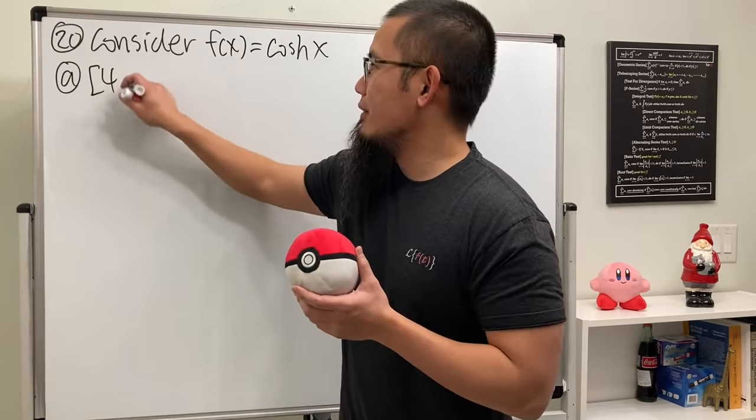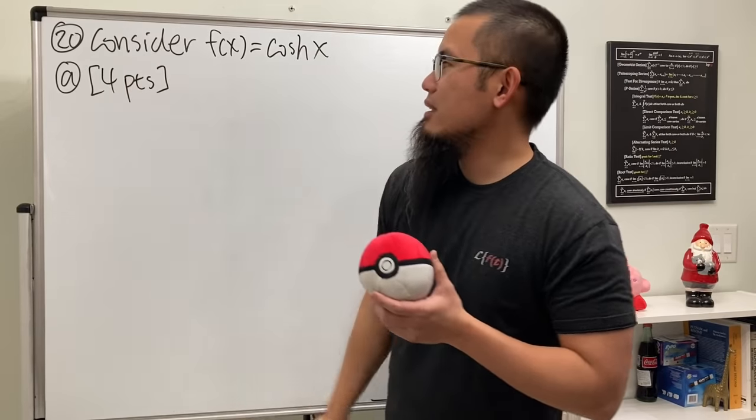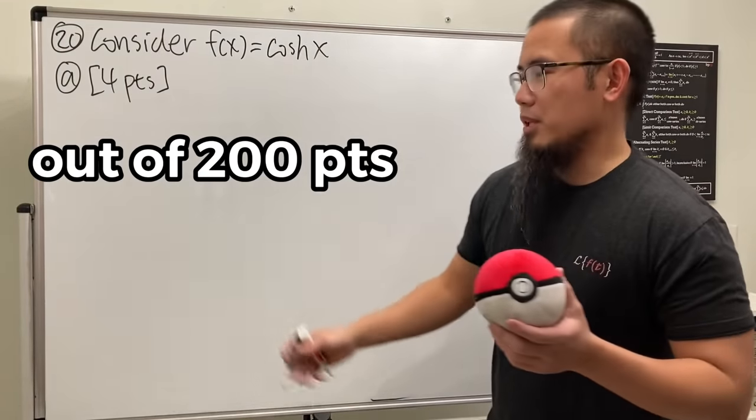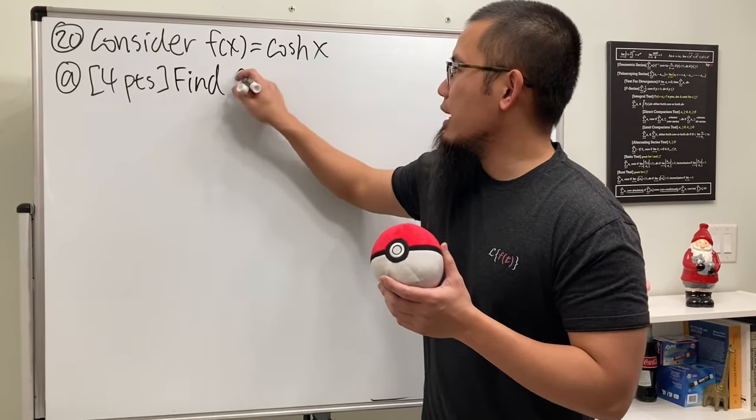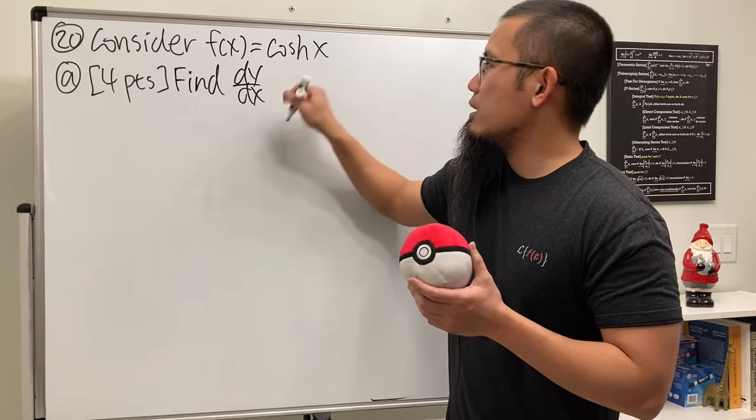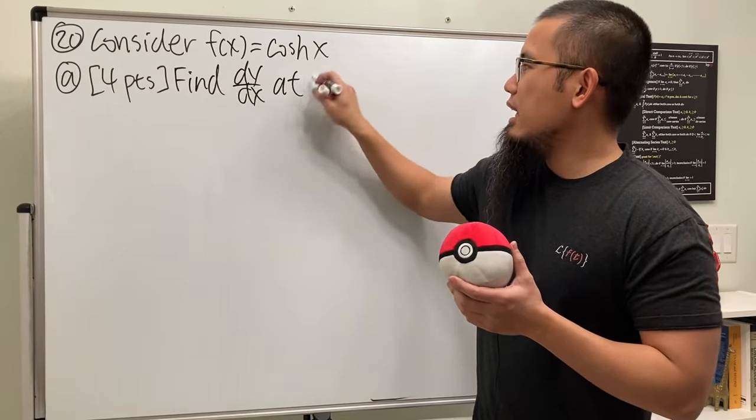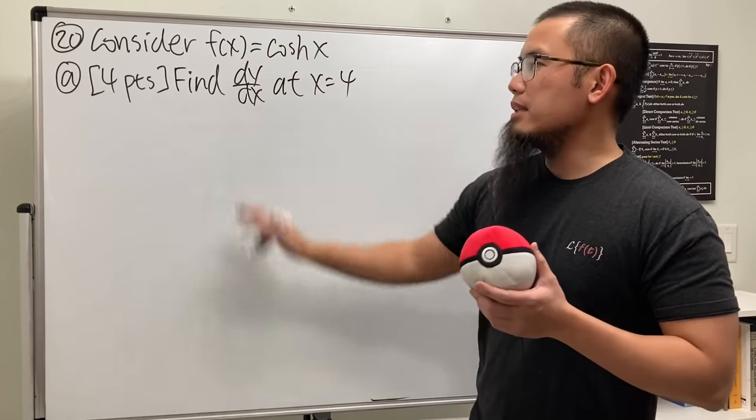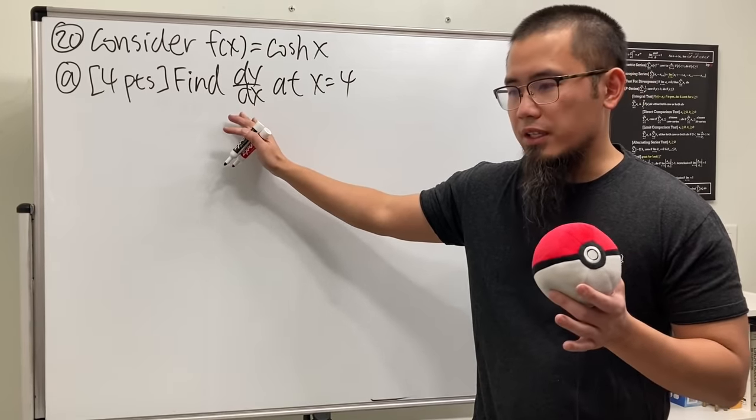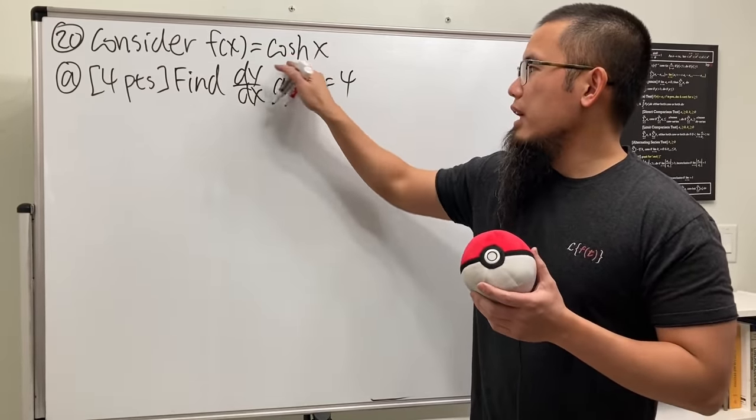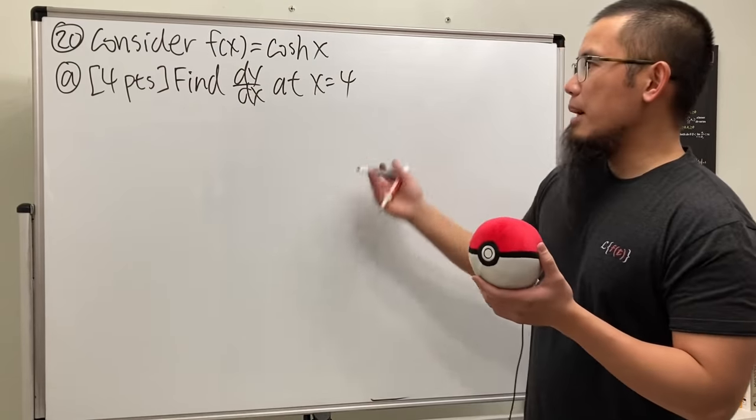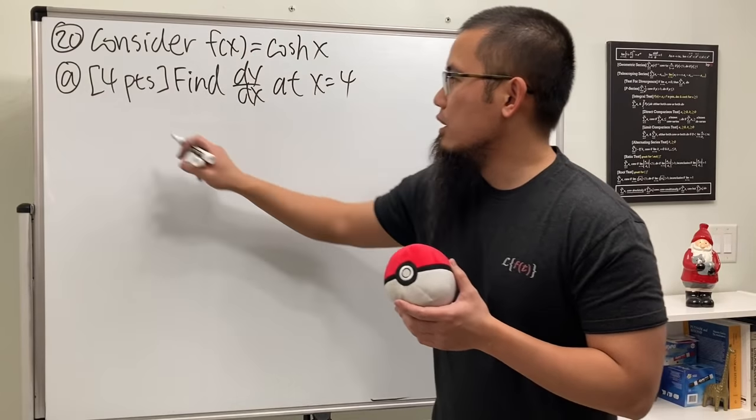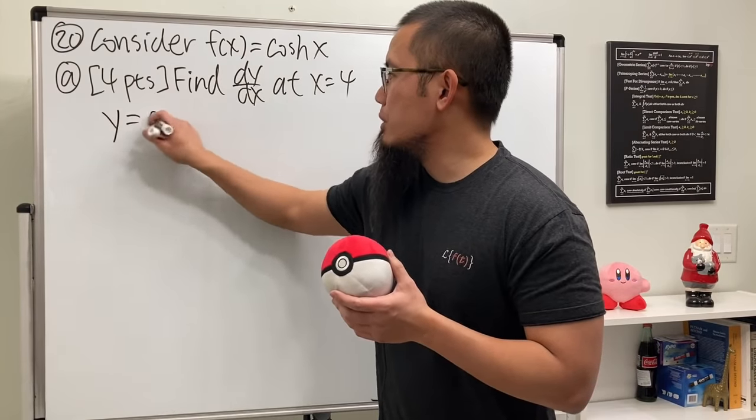We are going to find the slope of the line tangent to the curve at x equals 4. I wrote it down as the slope of the tangent line to the curve at x equal to 4, but it's just dy/dx. This one is not bad at all because we know the function, so y is just cosh(x), and y prime is just positive sinh(x).